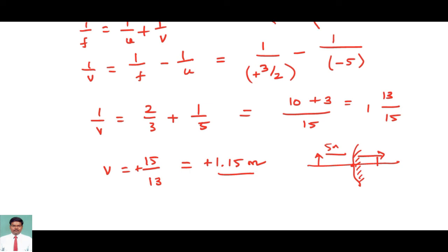Plus 1.15 means from the pole to the right side, the image will be formed at a distance of 1.15 meters. So now the position of the image can be evaluated.